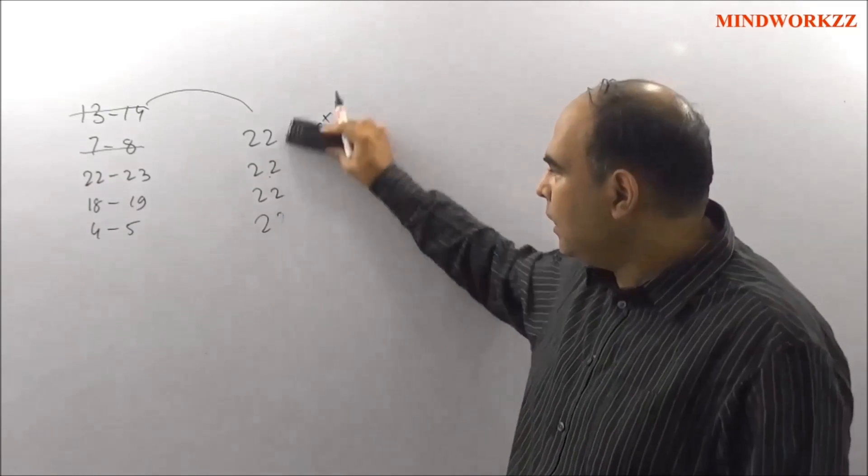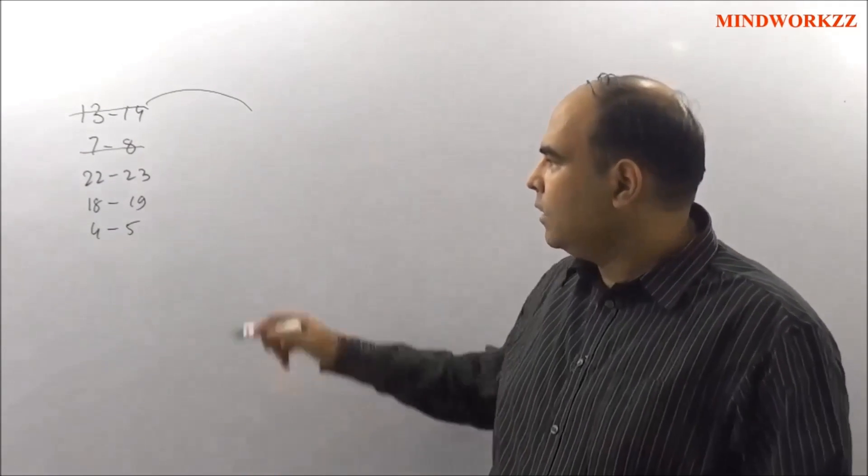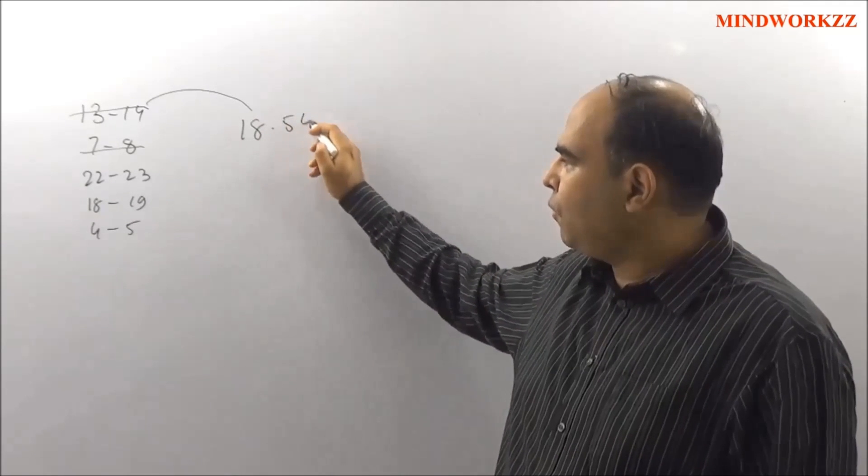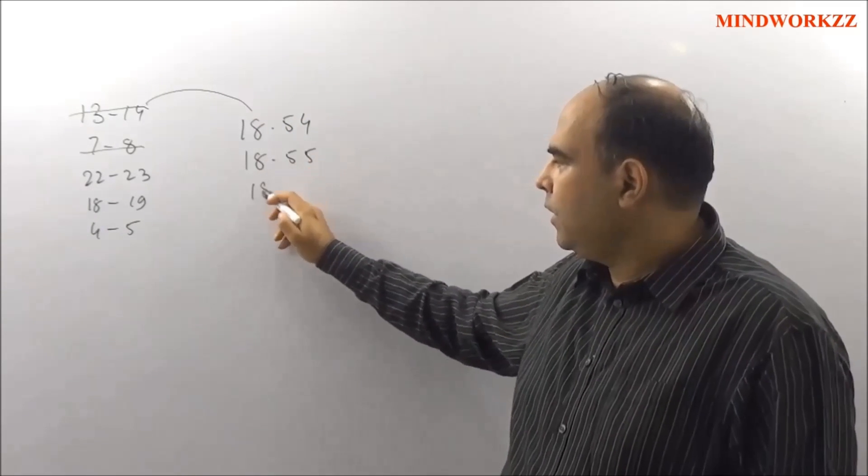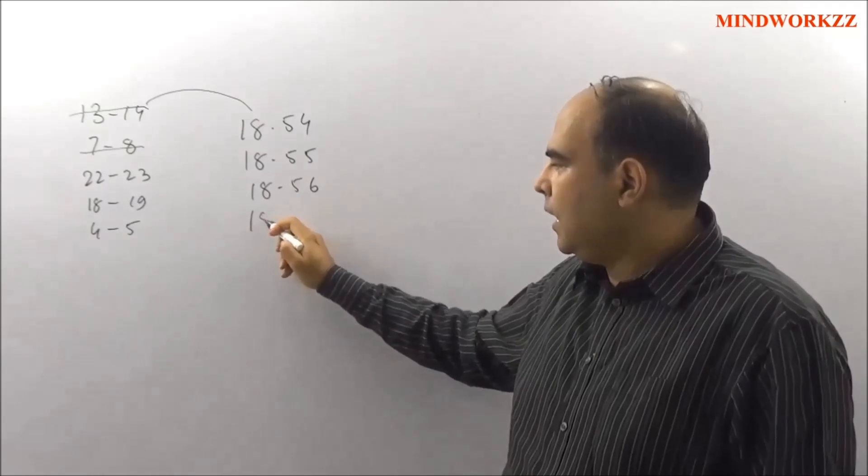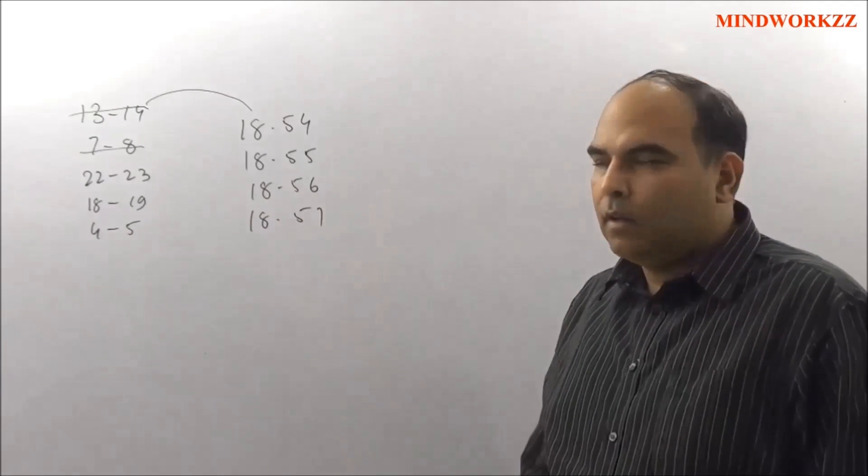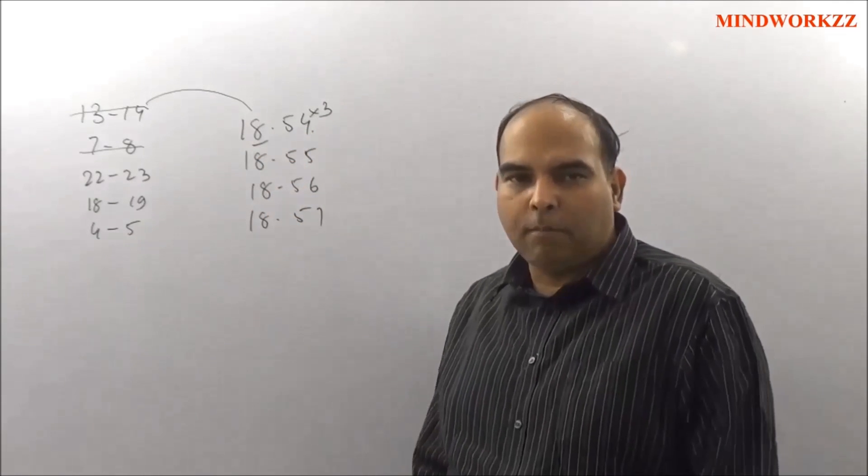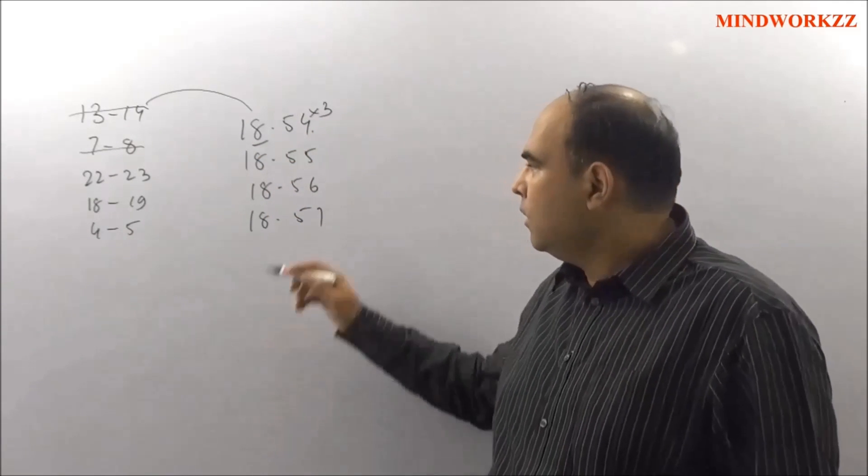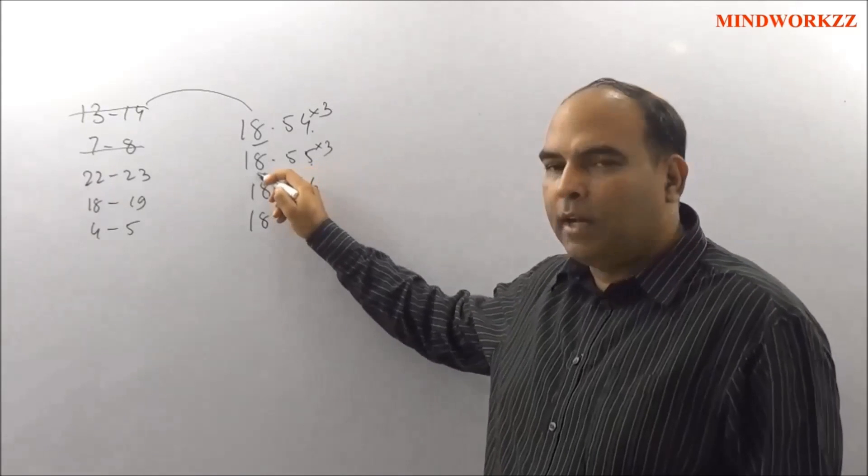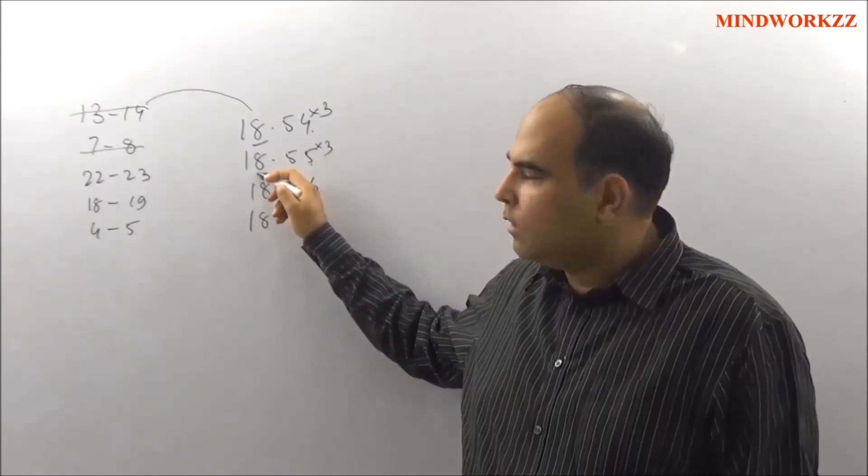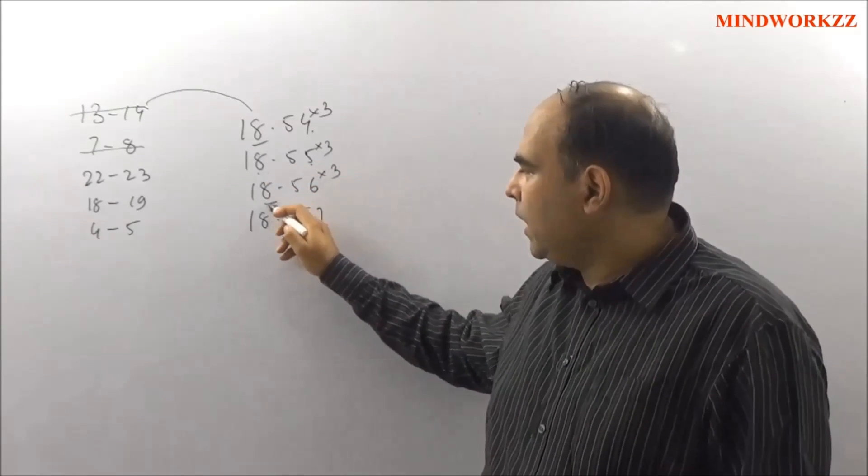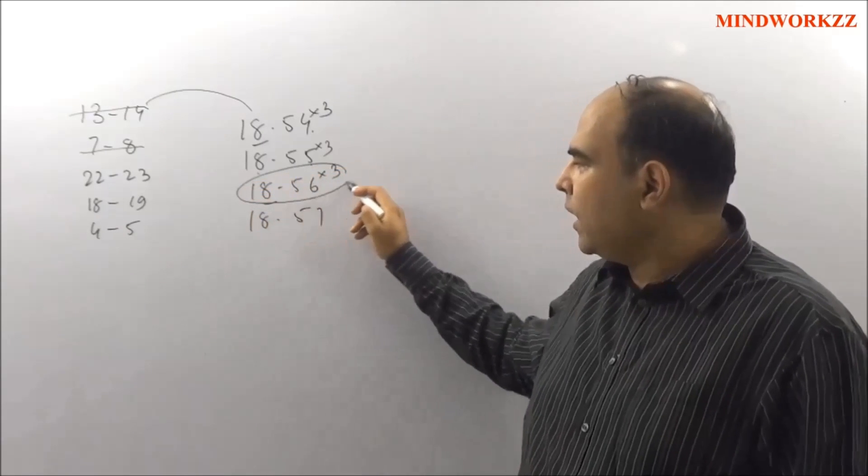Then you come to 18 to 19. And with 18, you spot 18.54, 18.55, 18.56, and 18.57. The 4 into 3 does not give me 8, so this is not giving me a unit digit equality. 5 into 3 does not give me an 8, does not give me a unit digit equality. 6 into 3 gives me an 8. So I'm getting a unit digit equality at 18.56. So I need to look at that and see whether the numbers match.